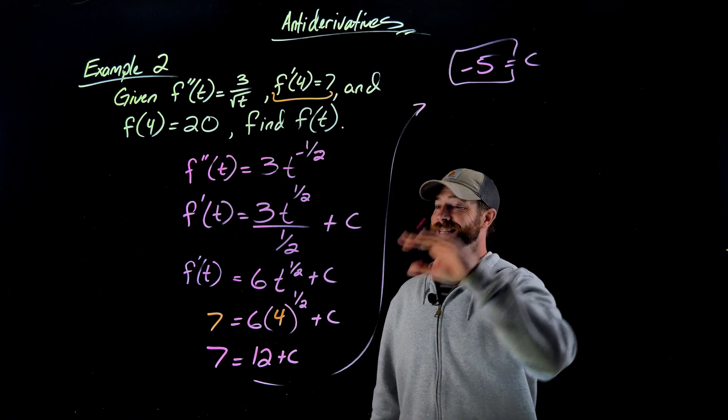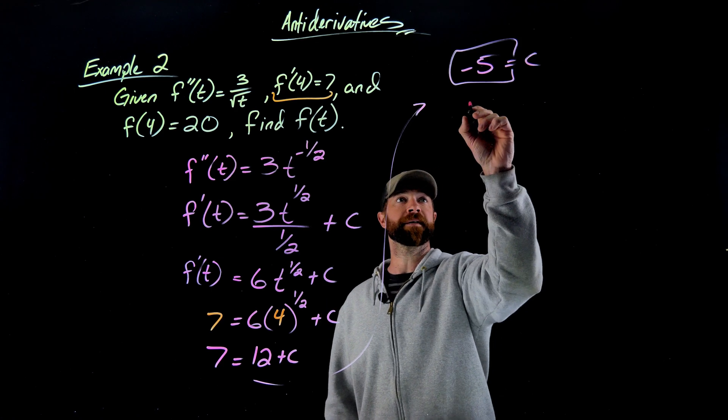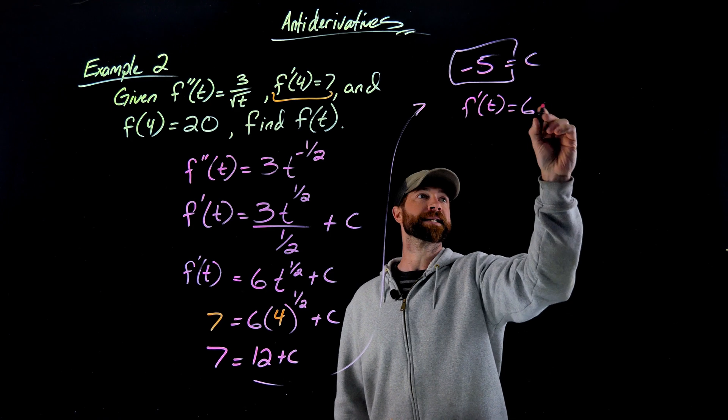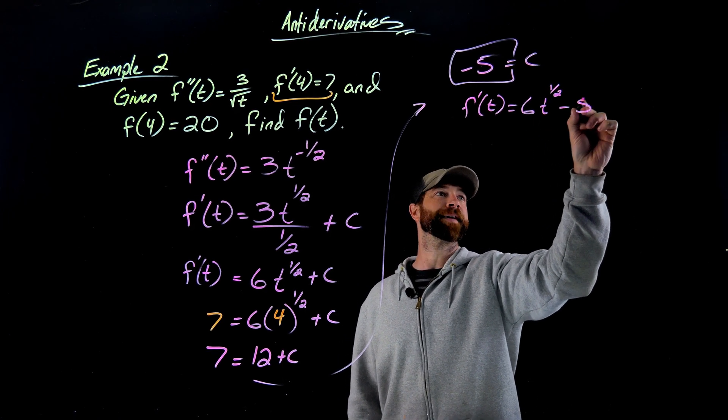So again, what this statement means is that this value right here is negative 5. So I now know that my first derivative is 6 times t to the 1 half minus 5.